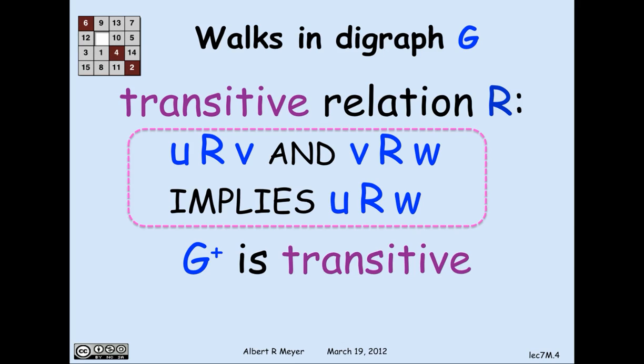Another way to state transitivity is to read u r v as saying there's an edge from u to v. Then transitivity says: if there's an edge from u to v and an edge from v to w, there's an edge from u to w — in other words, if there's a path of length 2, there's a path of length 1. By easy induction, it follows that if there's a path of any positive length between two vertices, then there's a path of length 1, i.e., an edge, between them.